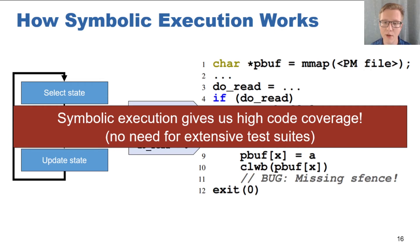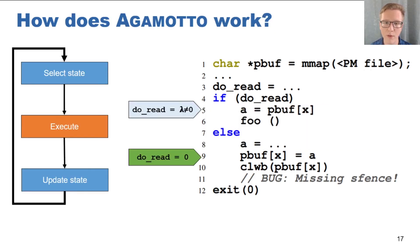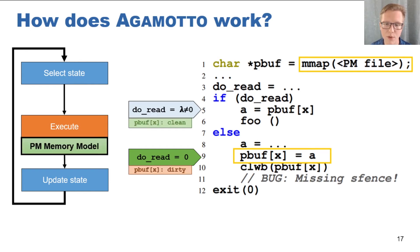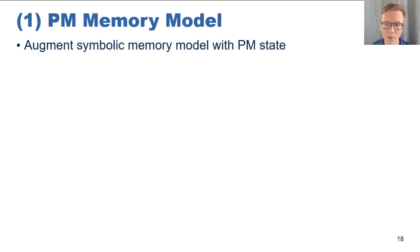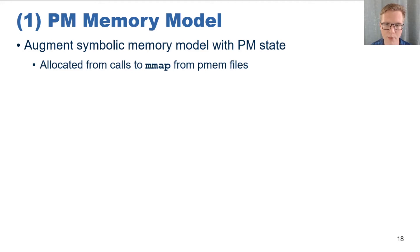This easily gives us high code coverage when finding persistent memory bugs. Now let's talk about how we implement Agamotto. The first issue we need to address is how we allocate persistent memory — for example, through mmap — and how operations are performed on persistent memory, for example, through storing persistent memory in pbuf. To do this, we augment Klee with a persistent memory memory model. This model adds functionality to Klee by extending the symbolic memory model to include persistent memory state. We also allow applications under test in Agamotto to allocate persistent memory through the mmap interface. High-level APIs ultimately make low-level calls to mmap, and so we can still test systems like PMDK this way.